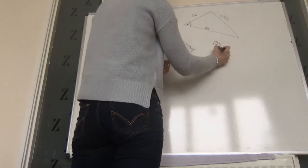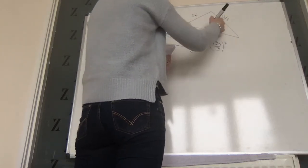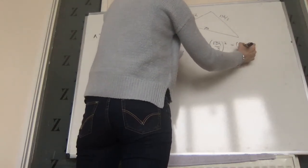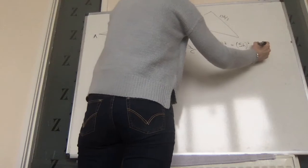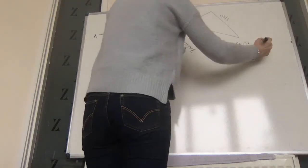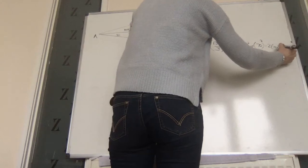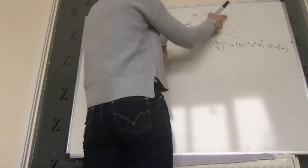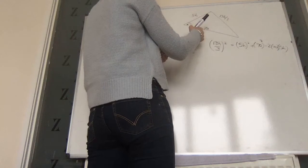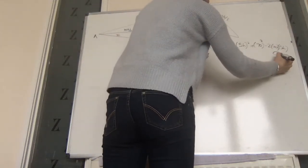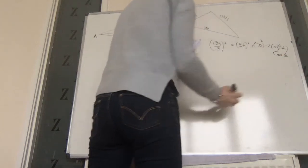So 13h over 3 squared, that squared is equal to that squared, plus that squared, minus twice that by that, times the cosine of the angle we want.